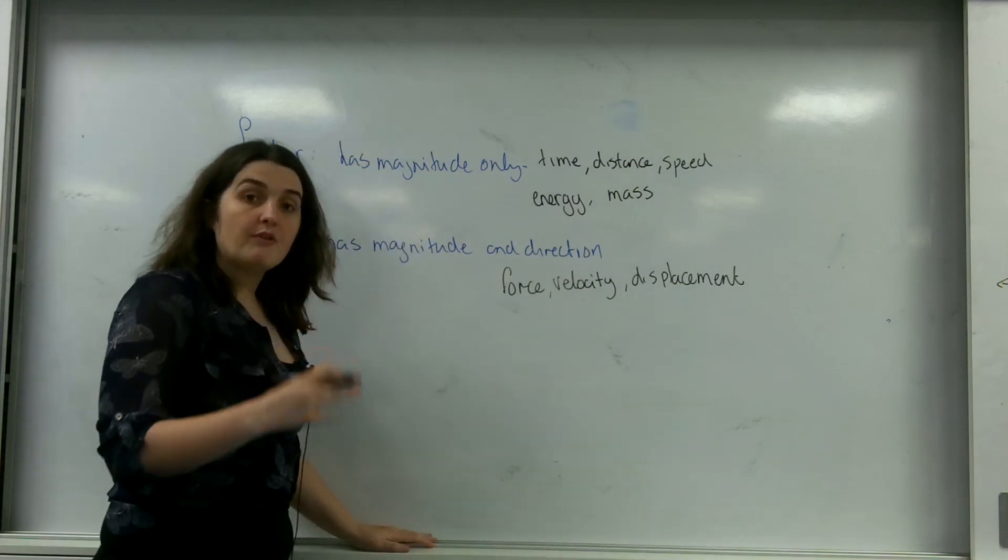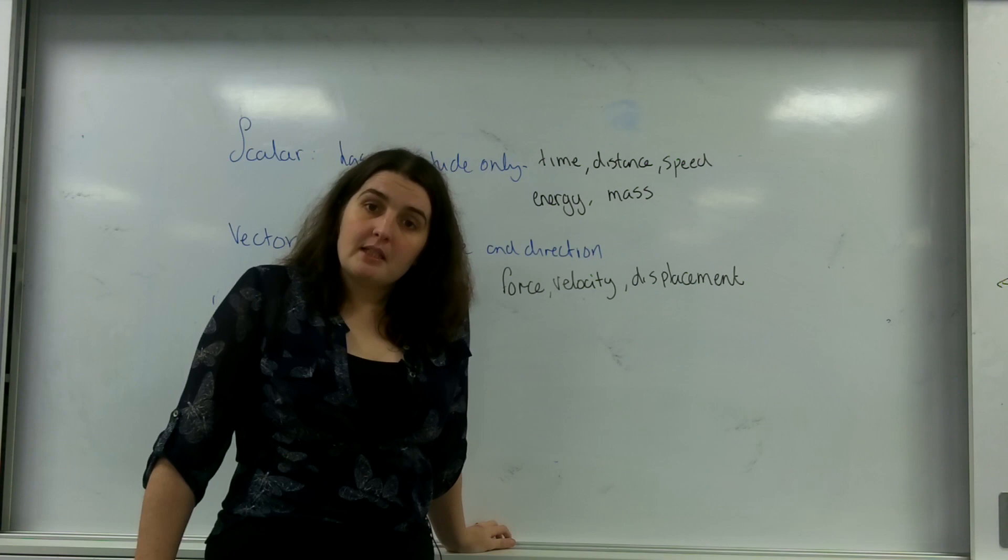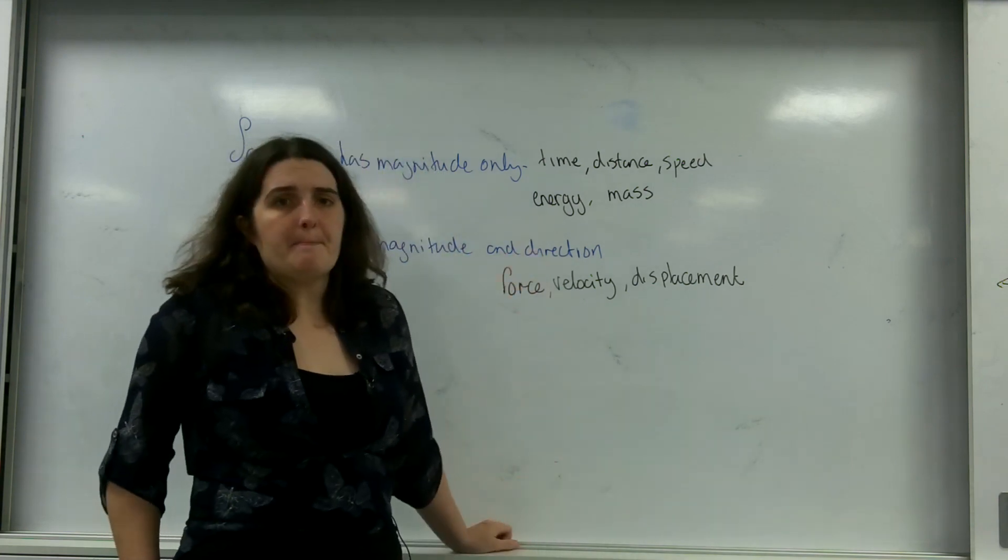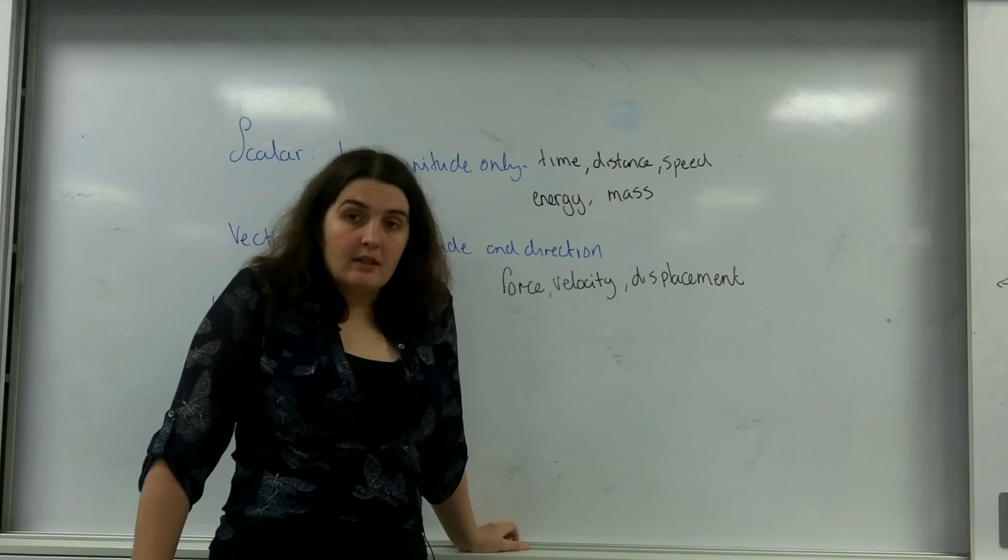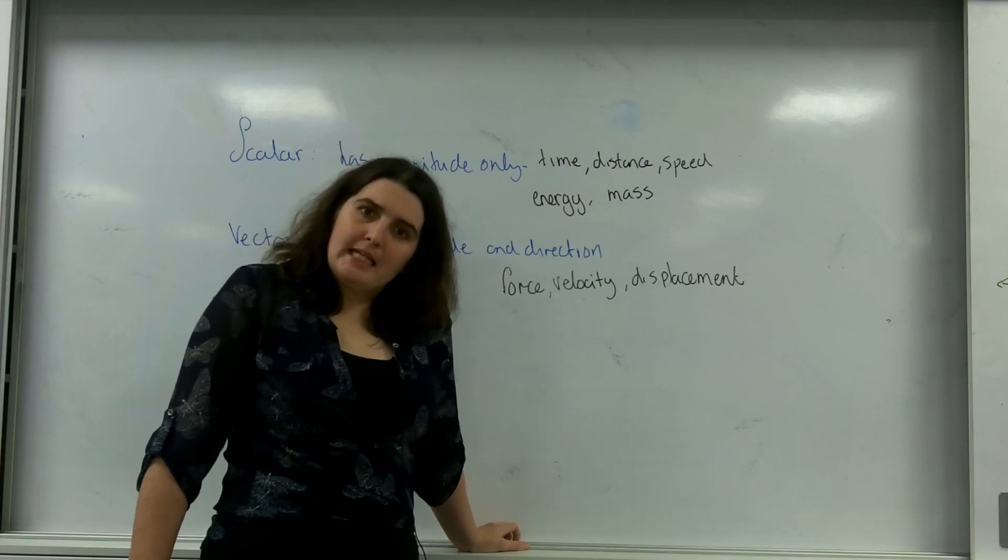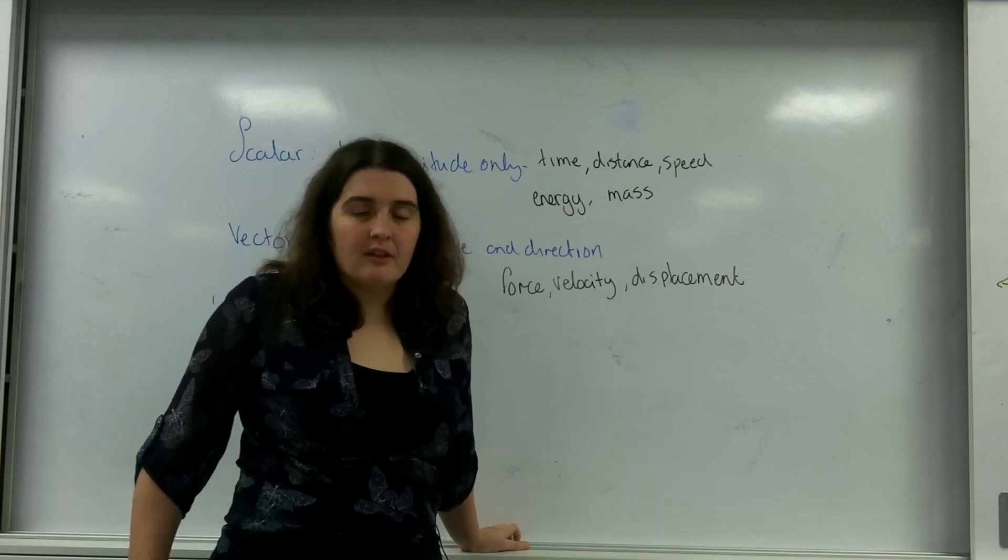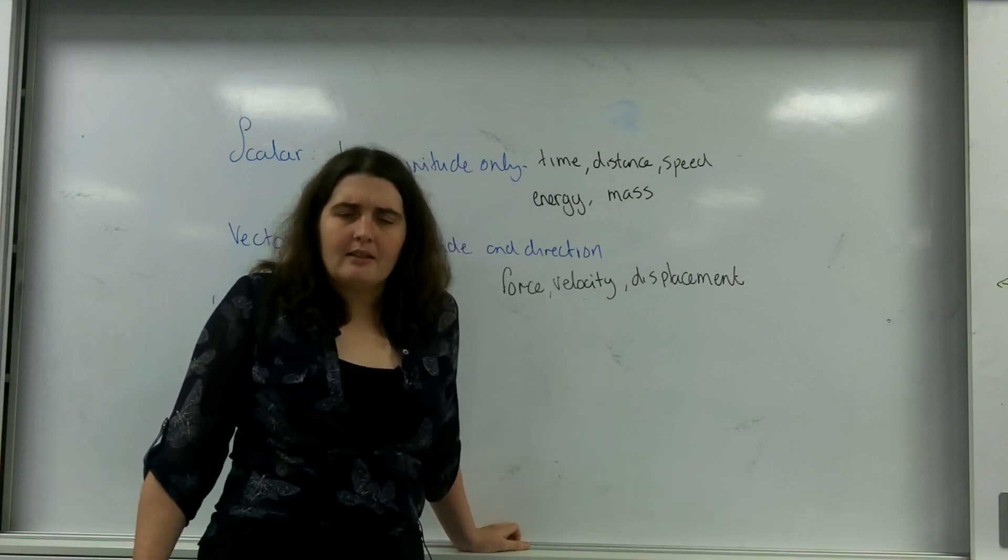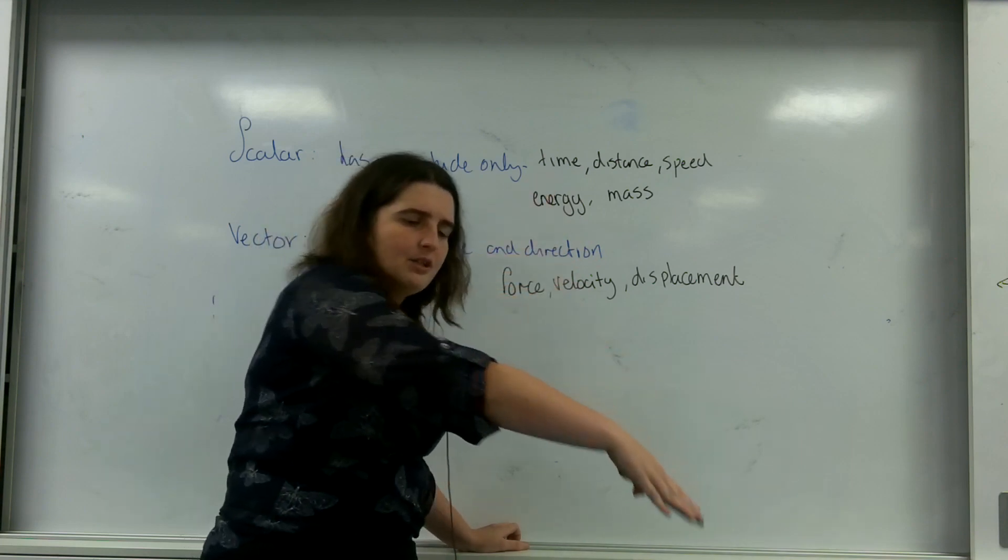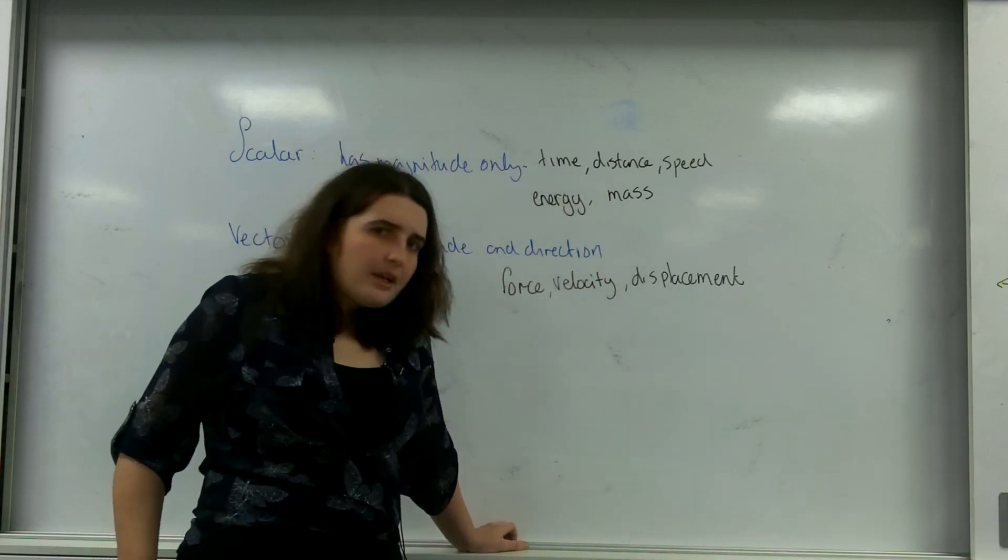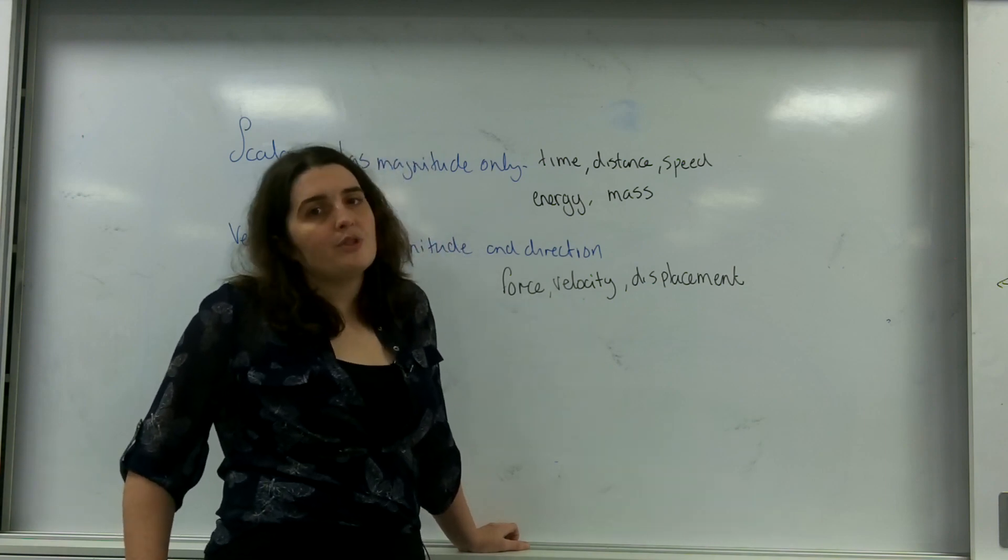It's important that you know the difference between a vector and a scalar quantity. Now, the one that seems the oddest is energy. Energy can be plus or minus because you can give it out or take it in. However, it doesn't actually have a direction. It's either out or in. There's no working in 30 degrees this way or 40 degrees under the horizontal. It's just either out or in, which is why it is a scalar quantity.